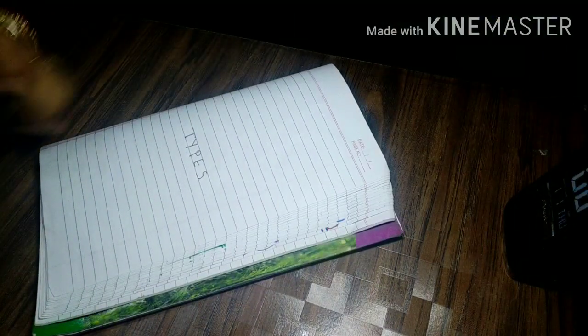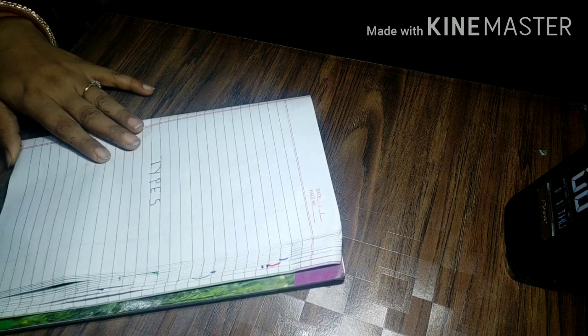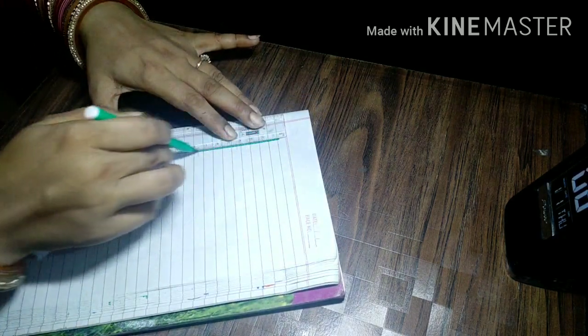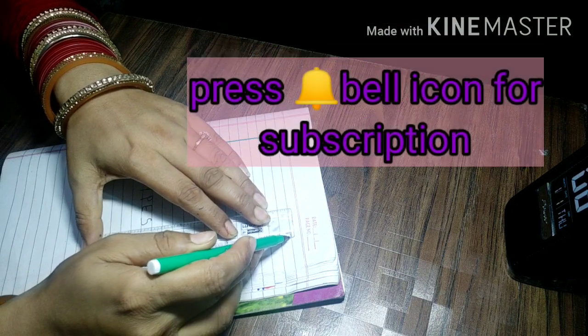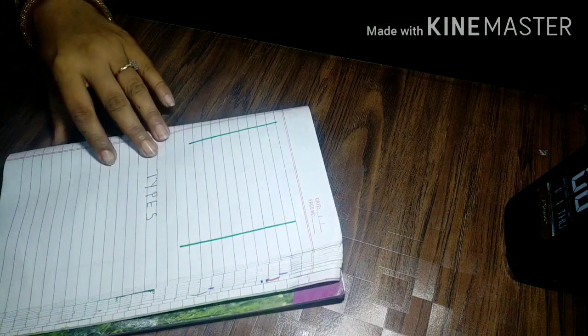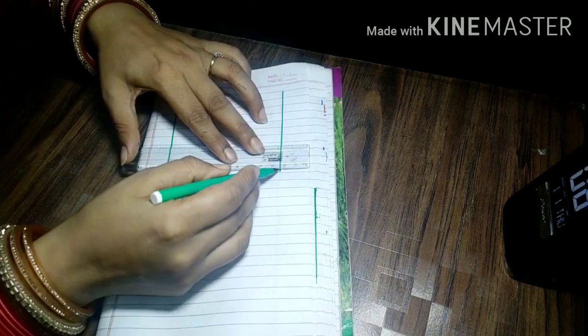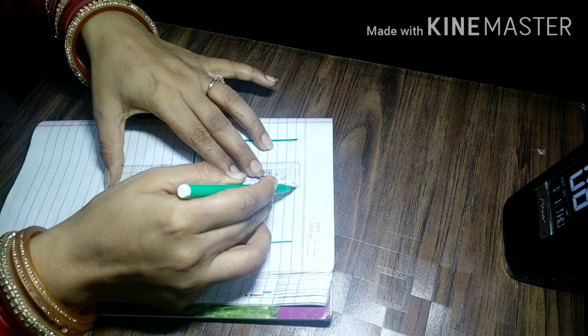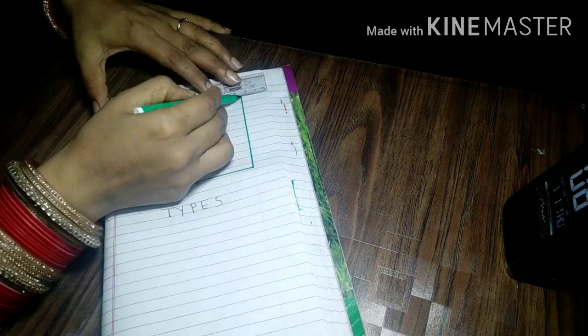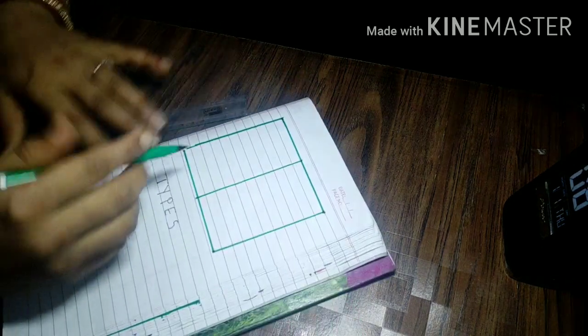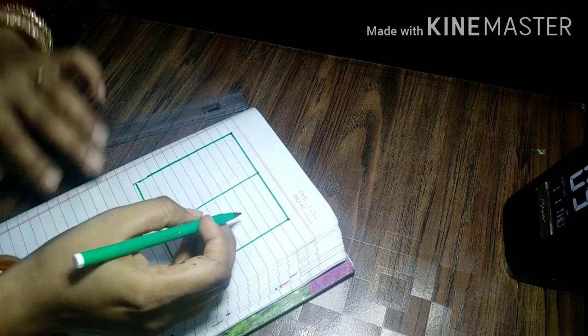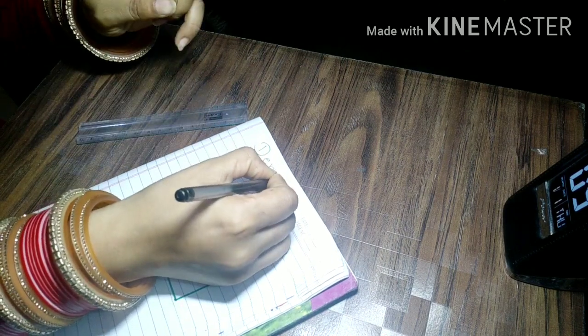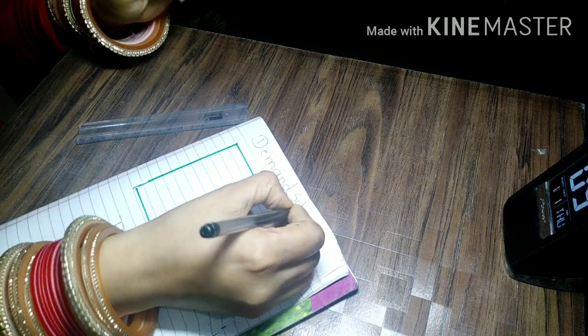I will show you a Demand Schedule to show you how to make this. We know that the Demand Schedule shows the price and the quantity demanded. The Demand Schedule will be divided into two rows. This is a box. This has been divided into two parts.